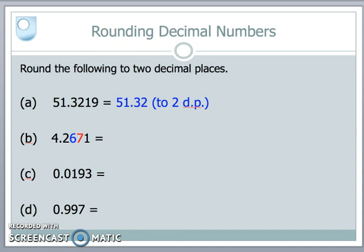My second number here, the third decimal place is a seven. That's bigger than five. So here, I shall round up. So my 4.267 becomes 4.27. My six gets rounded up to a seven.